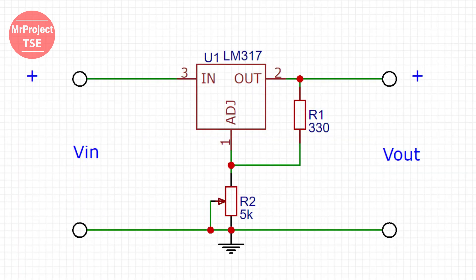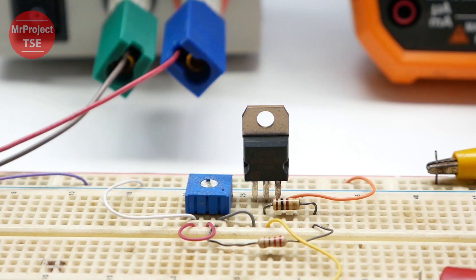In this circuit, we will use R2 5K ohms and R1 330 ohms. In this experiment, we will adjust output voltage from 1.25 volts to about 20 volts.